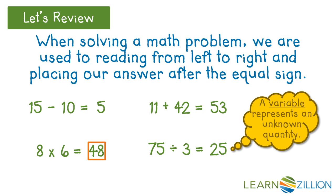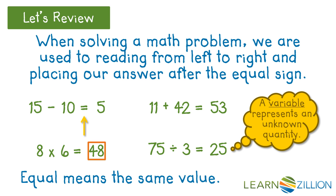All of these have one thing in common: the equal sign. Equal means the same value. This means that even though the left side looks different than the right side, they must have the same value. In this case, that is 5.